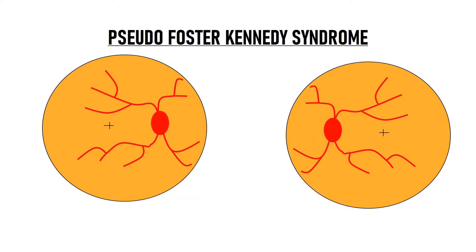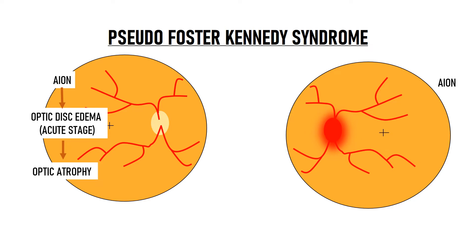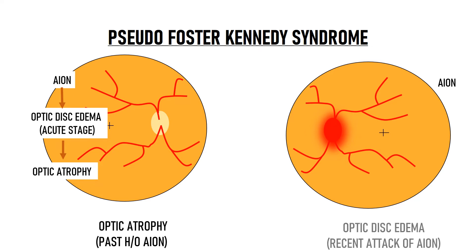Suppose a patient gets an attack of AION — anterior ischemic optic neuropathy. The patient gets an attack of AION in one eye, and AION causes optic disc edema in the acute stage and eventually leads to optic atrophy. Then a couple of years later, this patient gets an attack of AION in the opposite eye. When you examine this patient, you will see that one optic disc is atrophic because of the past attack of AION and the other optic disc is edematous because of the recent attack of AION.